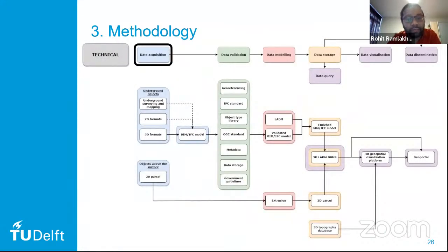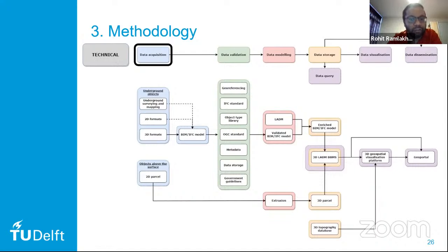Now follows the technical part. First is data acquisition and collection. When collecting data with regards to underground objects, we prefer to have 3D formats — specifically a BIM IFC model. But it's also possible to perform underground surveying and mapping, for example from scan-to-BIM, or convert 2D formats to a BIM IFC model. The objects above the surface will almost always be 2D parcels retrieved from the cadastre.